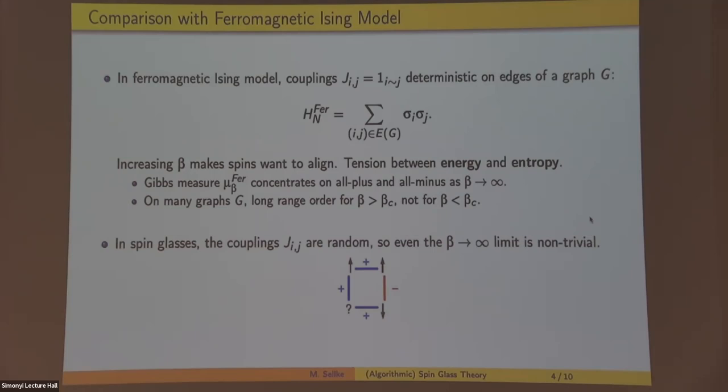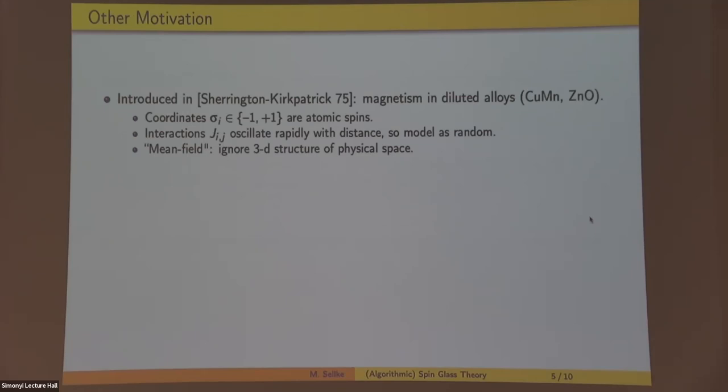Okay, so let me mention some connections before I start telling you thoughts about this model. So it was introduced by Sherrington and Kirkpatrick, and they were interested in magnetic models with some unusual properties, where the interaction between two atoms is kind of a rapidly oscillating function of their distance. And so you model the interaction as random. This is a mean field model because we're not thinking about any three-dimensional structure of real physical space.